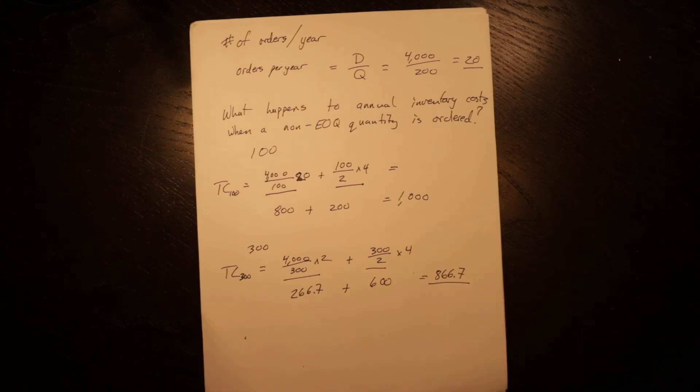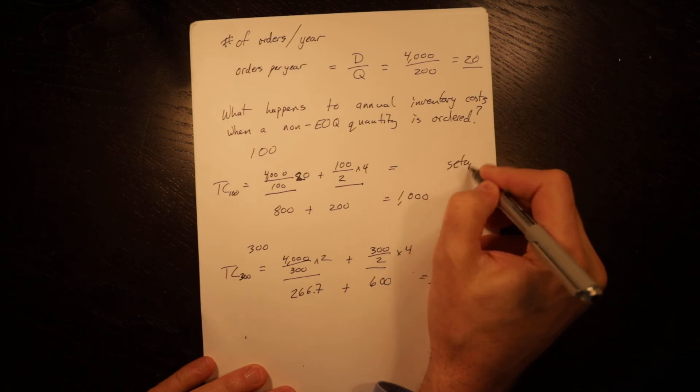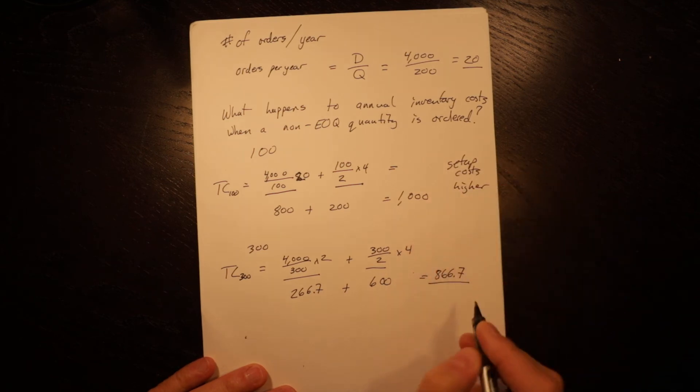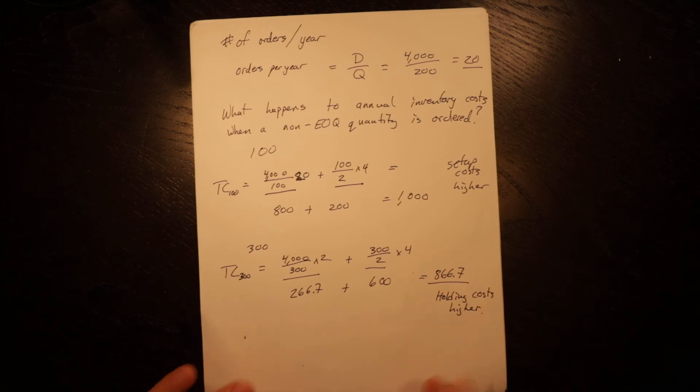Again, we're higher than that $800 total cost at the EOQ. Our cost goes up on either side. If we're below the economic order quantity, our holding costs are higher. And if we're above the economic order quantity, our holding costs are higher.